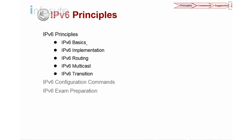In the principle section, we are going to start with IPv6 basics. Then we look into the implementation of IPv6 such as the addressing scheme — unicast, anycast, multicast, and all those things. Then we look into IPv6 in action, such as implementing IPv6 in unicast routing, and also the transition from IPv4 to IPv6.